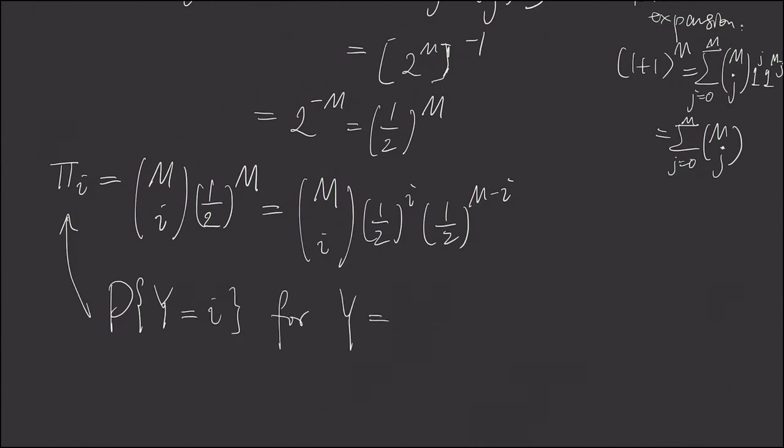And to interpret more on this time-reversible Markov chain: given a path, for example, let's say this is capital M and this is zero, and given a path bouncing back and forth. So for example, if we have a path and the horizontal axis is time,